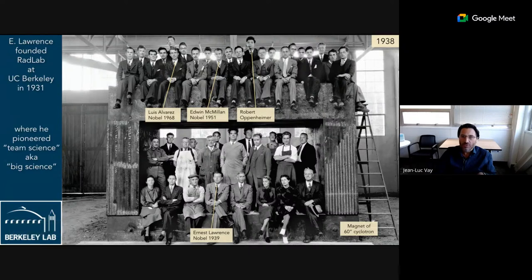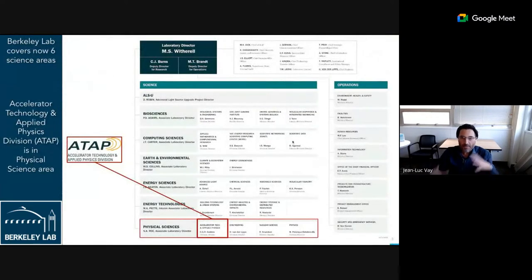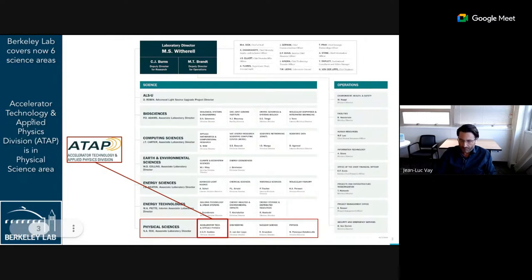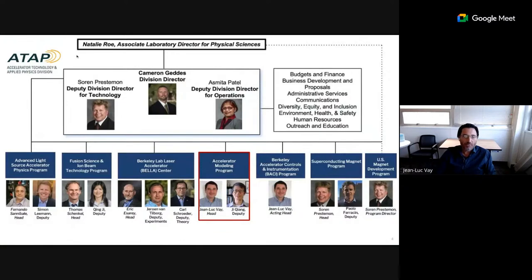Also pictured is Robert Oppenheimer. The lab has grown quite a bit and now has six areas: biosciences, computing sciences, earth and environmental sciences, energy sciences, energy technologies, and physical sciences. Our division is the Accelerator Technology and Applied Division, ATAP, which has a number of groups.